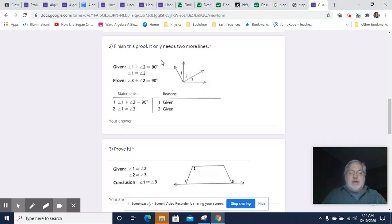Finish this proof. It only needs two more lines. So let's consider this. We've got angle 1 plus angle 2 is 90 degrees. Angle 1 is congruent to angle 3. So we know that this is 90 degrees. We also know that this is congruent to this. And I do recommend drawing things here. It really helps to draw the information, especially if you're a visual person like me. We want to prove that angle 3 plus angle 2 equals 90 degrees.